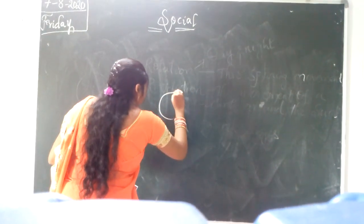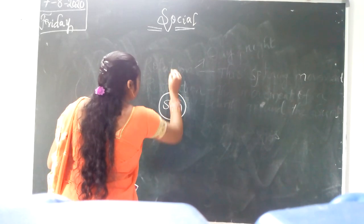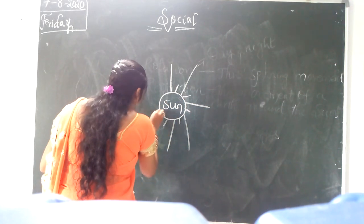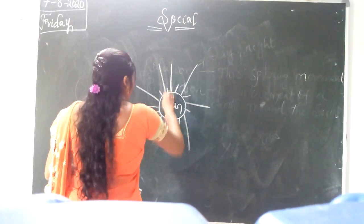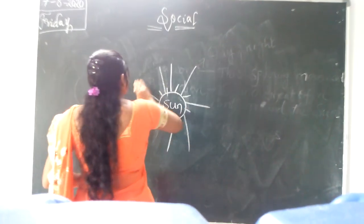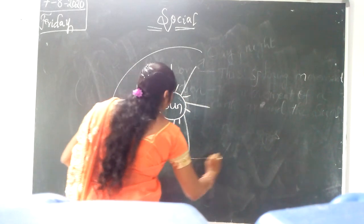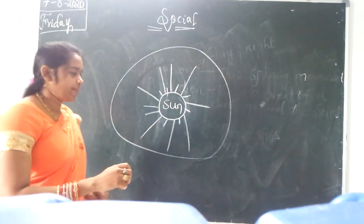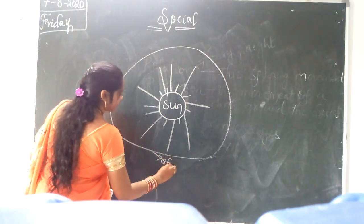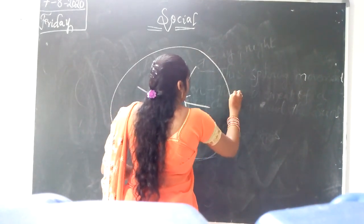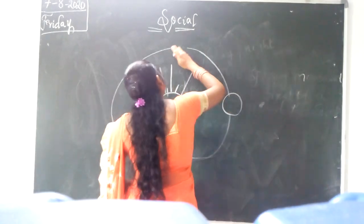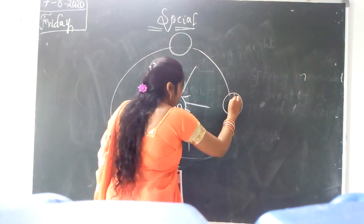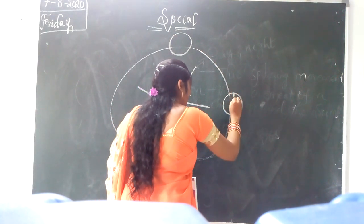In the solar system, the sun is in the middle. All the planets revolve around the sun. Here I am drawing a picture. This is the orbit — the path the Earth takes around the sun. This path is known as the orbit.